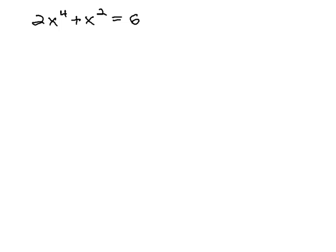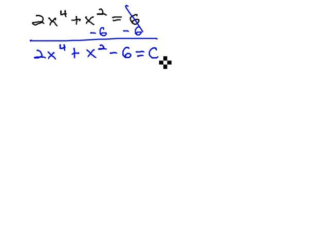In this video, we're going to take a look at solving the equation 2x to the fourth plus x squared equals 6. As usual, when we're solving equations that have variables with exponents, we like the equation to equal zero. So I'm going to start by subtracting 6 from both sides, giving us 2x to the fourth plus x squared minus 6 equals zero.